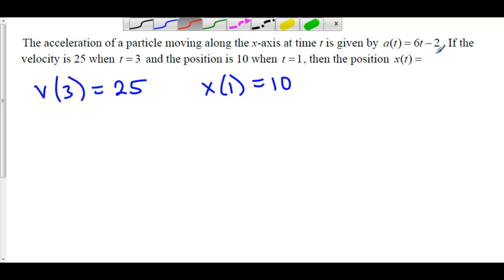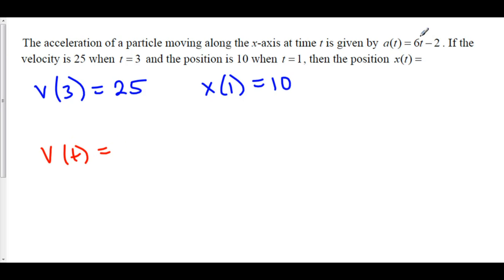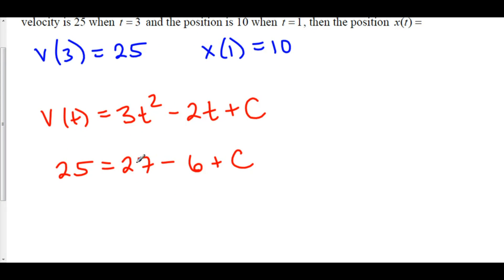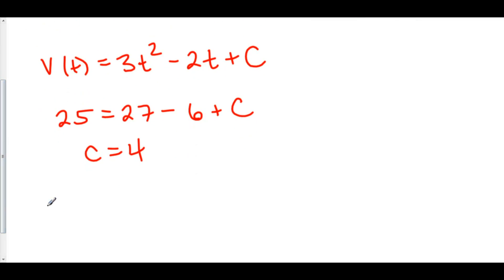We know that acceleration is 6t minus 2. That means our velocity is the antiderivative of acceleration. The antiderivative of 6t is 3t squared, the antiderivative of negative 2 is negative 2t, and this is plus C. We can now plug in our initial condition: 25 equals 3 times 3 squared minus 2 times 3 plus C, which gives 27 minus 6 equals 21, and 25 minus 21 is 4. So C equals 4, and our velocity function v(t) = 3t² minus 2t plus 4.